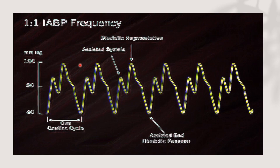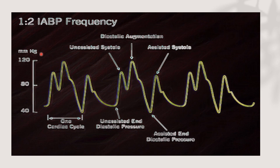One to one frequency means that each beat is assisted by the balloon. It is used when we start the balloon and the heart rate is less than 100. One to two means the first beat is assisted by the balloon and the second beat is not assisted — alternating: one assisted, one not assisted.